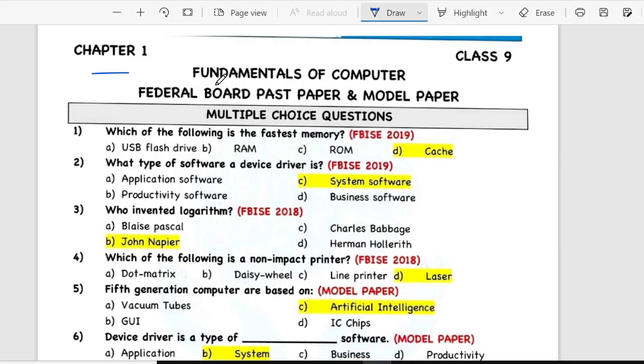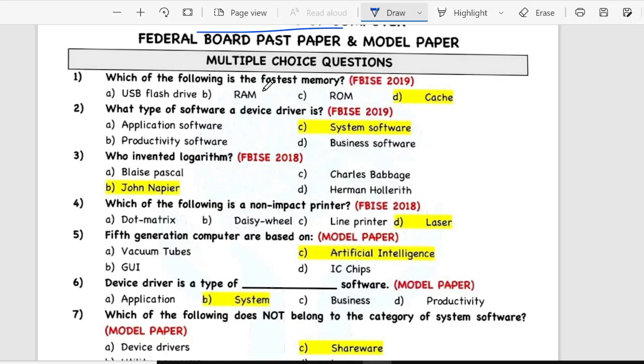Chapter 1: Fundamentals of Computer. You have multiple choice questions. Which is the following is the fastest memory? Cache memory is the fastest one. Which type of software or device driver? System software. This will be mentioned in which year in Federal Board.